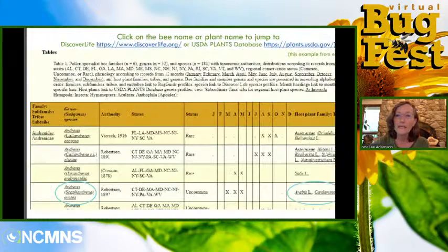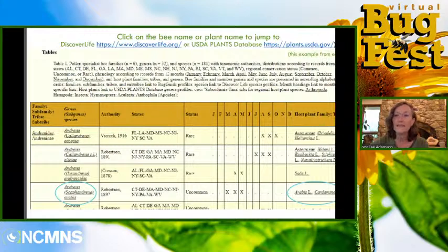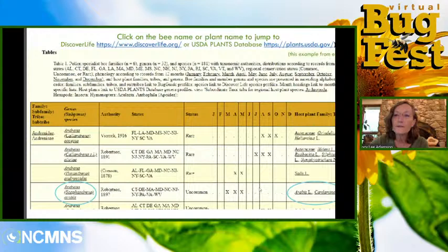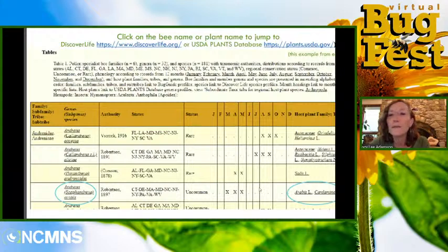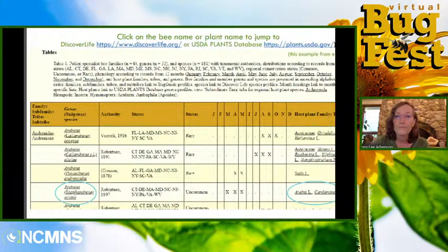On the site you'll find bee family, genus, species, which states they've been found in, their conservation status, and phenology — that means when you can expect to see adult bees out and about, shown as a January through December list. And host plant info. The circled items illustrate how sometimes the species name relates to its host plant — in this case, it's Andrena arabis, and the plant name is the same.